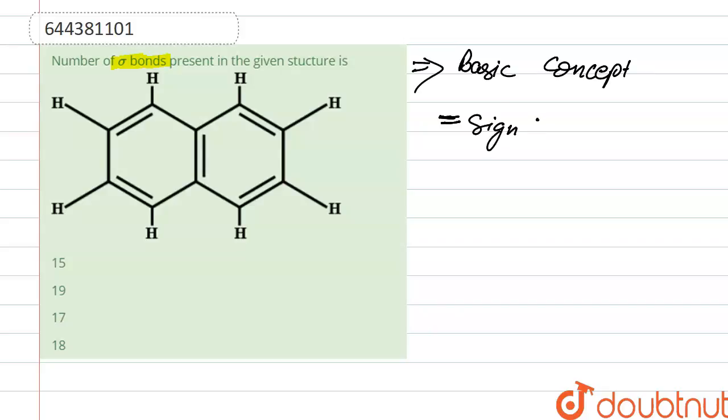In this double bond, one is a sigma bond and one is a pi bond, right? And if there's only one single bond, that means one sigma bond is present. Right, so here in this given structure,